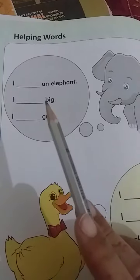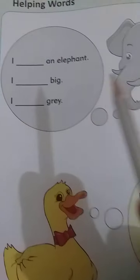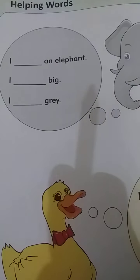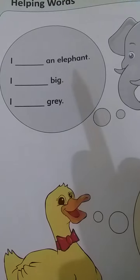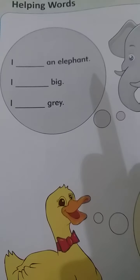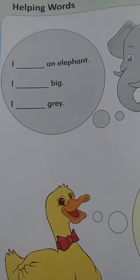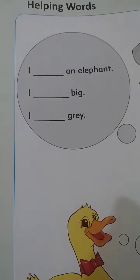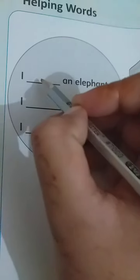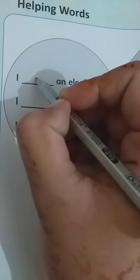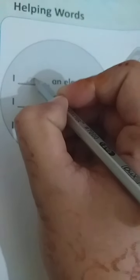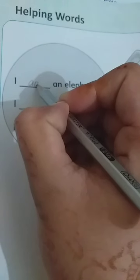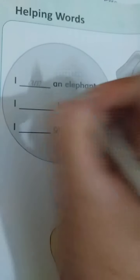I dash an elephant. Students, I کے ساتھ کس کا یوز آتا ہے؟ M کا — 'am'. I am an elephant.